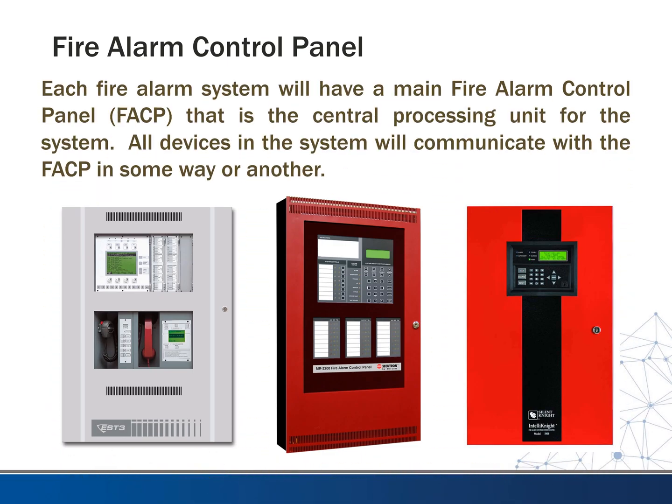Each fire alarm system will have a main fire alarm control panel, abbreviated as FACP. This is the central processing unit for the system. All devices in the system will communicate with the fire alarm control panel in some way — either to get information from the panel or to send information to the panel. You can see some examples in the pictures there of what some panels look like.